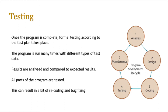Once the program is finished, you move into specific types of testing: alpha, beta, and end-user testing. These check the robustness of the program code. The program is run many times with different types of test data — extreme, erroneous, boundary, and normal — to cover all eventualities. All parts are rigorously tested. During this stage there can be recoding and bug fixing: you fix a problem, test again, discover a new problem, fix it, and keep going until the program passes the test plan.